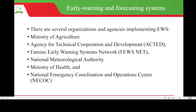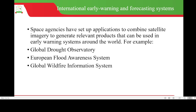Several organizations and agencies implement early warning and forecasting systems, for example the Ministry of Agriculture, the Agency for Technical Cooperation and Development, the Famine Early Warning Systems Network, the National Meteorological Authority, the Ministry of Health and the National Emergency Coordination and Operations Centers. Space agencies have also set up applications to combine satellite imagery to generate relevant products for early warning systems around the world, for example the Global Drought Observatory, the European Flood Awareness System and the Global Wildfire Information System.